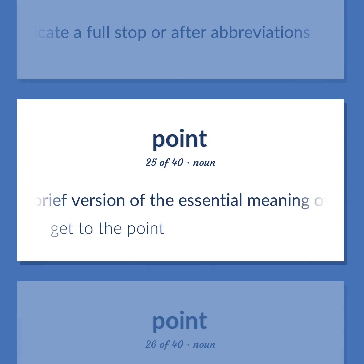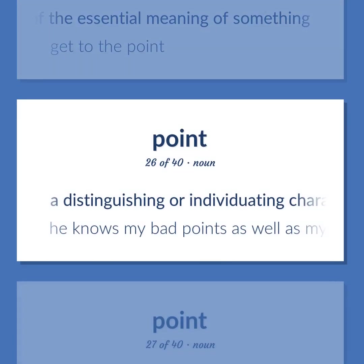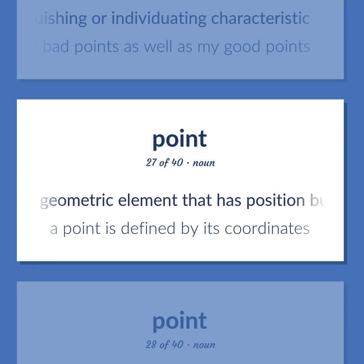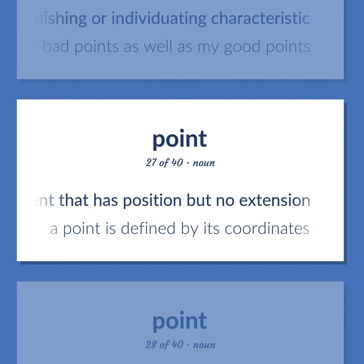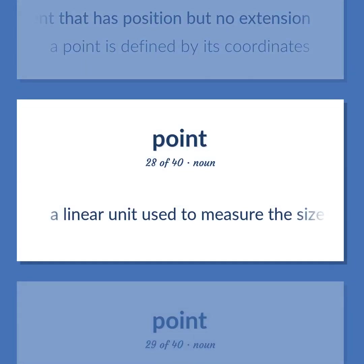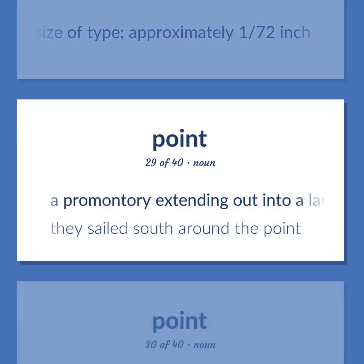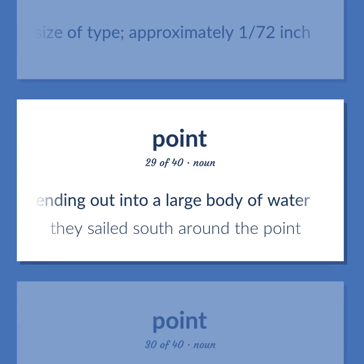A brief version of the essential meaning of something — get to the point. A distinguishing or individuating characteristic — he knows my bad points as well as my good points. A geometric element that has position but no extension — a point is defined by its coordinates. A linear unit used to measure the size of type, approximately 1/72nd inch. A promontory extending out into a large body of water — they sailed south around the point.